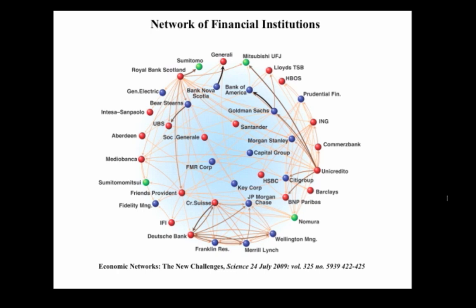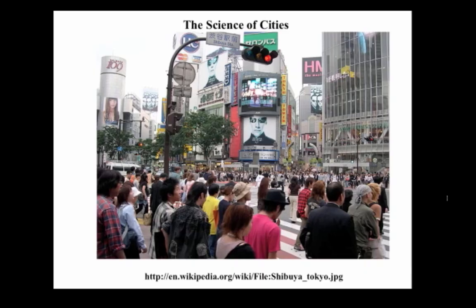Economies are another type of complex system in which networks of interactions are fundamental. Here we see a sample of the international financial network, where nodes represent financial institutions and links represent relations among them — for example, if a bank owns shares of another bank, the two are linked. The amount of connectivity in such a network, as well as the kinds of links present, can have a big effect on how stable the network is to changes, such as a bank going out of business. The new interdisciplinary field of network science, which arose from the complex systems research community, studies these kinds of phenomena across many disciplines.